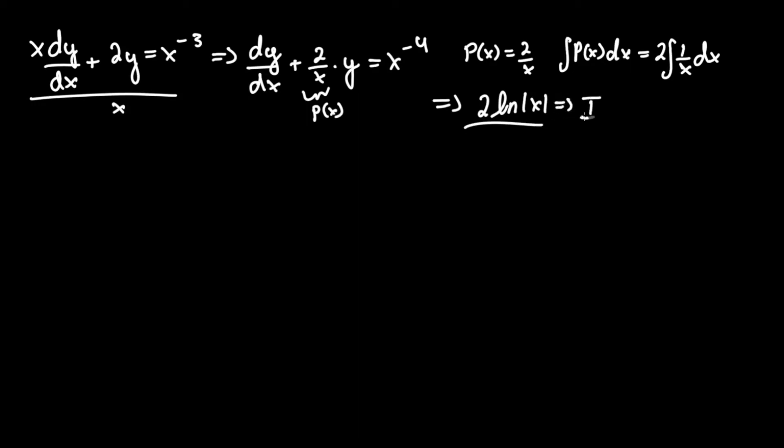To find the integrating factor I(x), or μ(x), that equals e^(∫p(x)dx). Since we already have the integral of p(x)dx, let's plug that in. That becomes e^(2ln|x|). To simplify this, we move the 2 inside as the exponent using logarithmic rules.